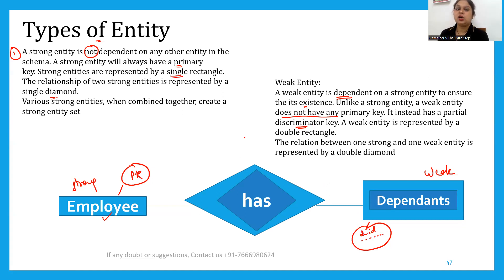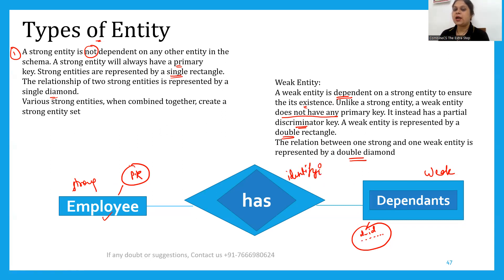The strong entity, which has a primary key, is represented by a single rectangle, while the weak entity is represented by a double rectangle. That is how you represent a strong entity and a weak entity in an ER diagram.